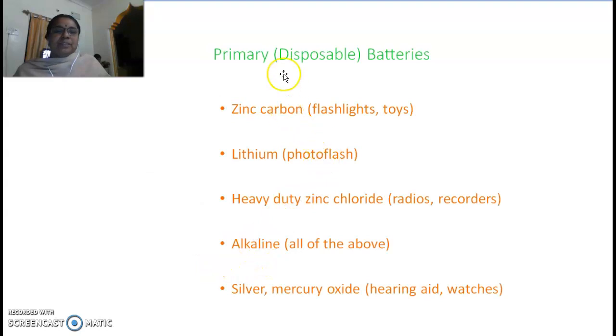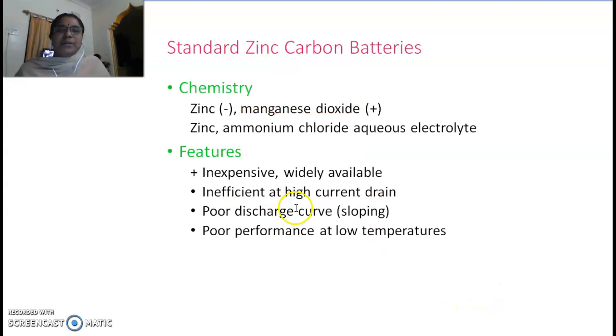What are the primary types of disposable batteries? Zinc carbon, lithium, heavy duty zinc chloride, alkaline batteries which include all these types, and silver oxide, which can be used in hearing aids for deaf people and in our watches also.